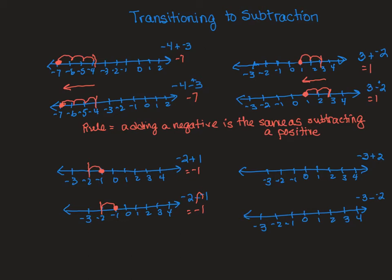Let's do it one more time. In the problem next to it, if I start at negative 3 and I add 2, I'm going in the positive direction. I go 2 in the positive direction, and my answer is negative 1. Now in the bottom problem, I'm taking away that negative — they negate each other, they cross each other out. That negative undoes the subtraction, so now I'm adding 2 to negative 3, and my answer is negative 1.